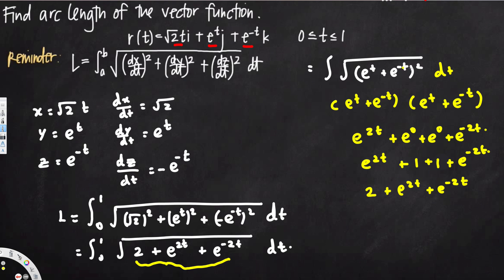Since we have a perfect square inside the square root, we can remove the square root. The integral from 0 to 1 becomes simply the integral of (e^t + e^(−t)) dt.